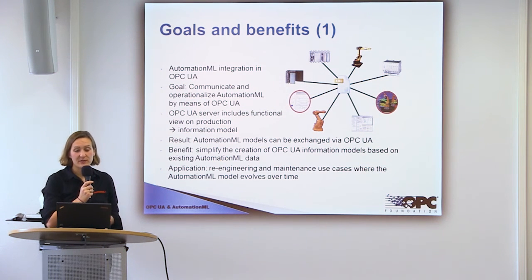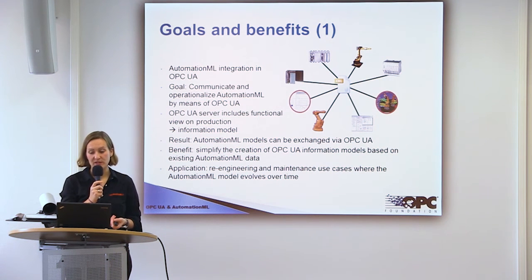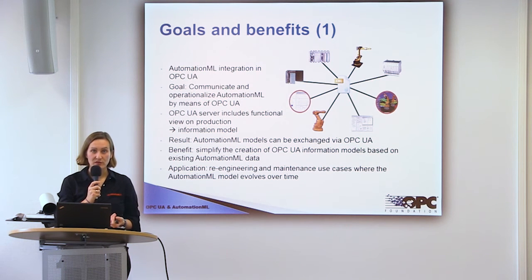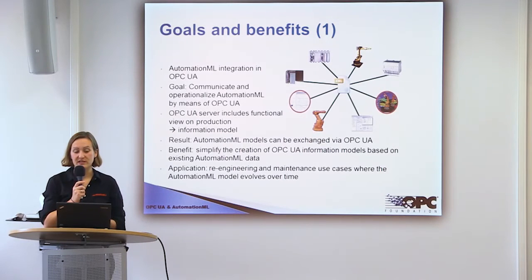The goals and benefits can be split into two directions. On the one hand, the AutomationML integration in OPC UA, where the goal is to communicate and operationalize AutomationML by means of OPC UA. The OPC UA server includes the functional view on production — the information model. The result is that AutomationML models can be exchanged via OPC UA, and it can simplify the creation of OPC UA information models based on existing AutomationML engineering data. The application is for every re-engineering and maintenance use case where AutomationML models evolve over time.